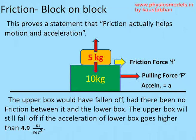Friction has helped the upper box move towards the right. Note the precise wording: friction opposes the direction of tendency, but it doesn't oppose motion itself. The upper box tends to move towards the left as per Newton's first law, and friction opposes that tendency — therefore friction acts towards the right. If friction weren't there, the upper box would have simply slipped and fallen off.